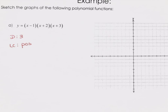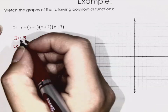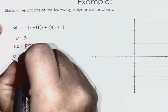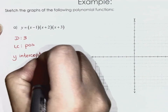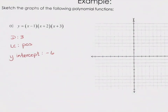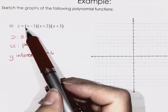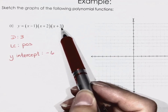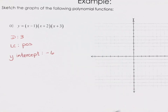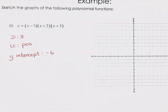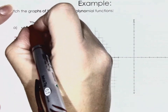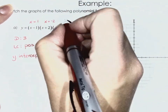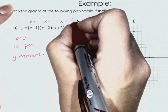Let's find our y-intercept. What's our y-intercept? Negative 6. How did we do that? All we did was substitute zeros in: negative 1 times 2 is negative 2, negative 2 times 3 is negative 6. The x-intercepts are at x = 1, x = −2, and x = −3.